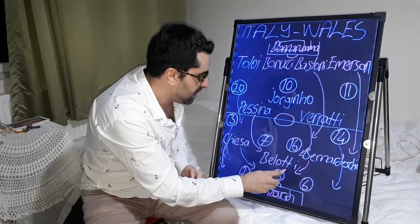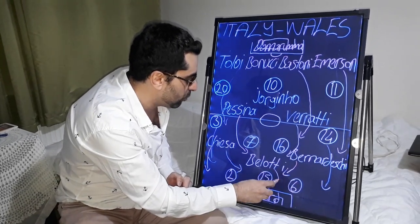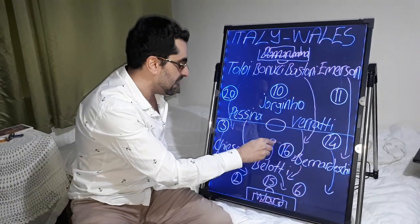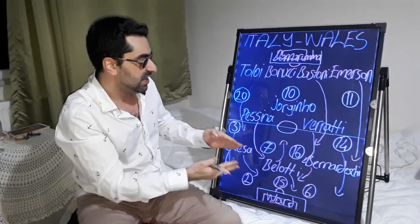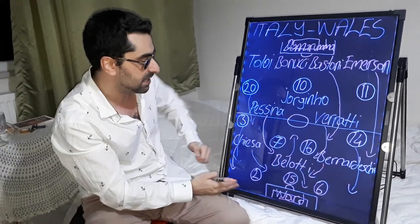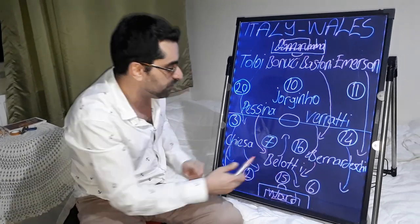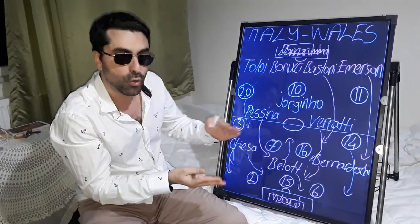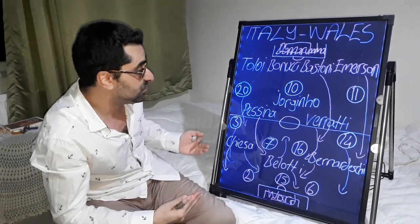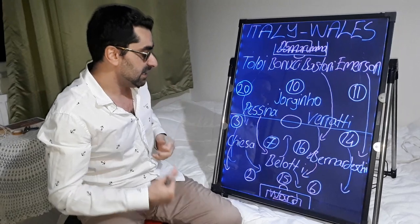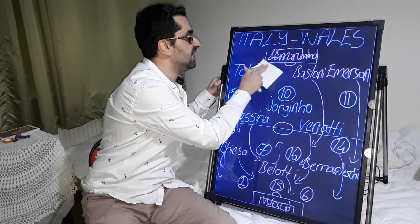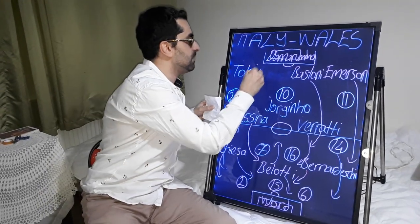In this game, Bellotti sometimes made runs between Wales' defence line, and Verratti sometimes dropped deep to receive the ball. Wales' defenders made fouls many times, and Verratti found a few goal positions but missed all of them. In the beginning of the second half, Bonucci went off and Acerbi replaced him in the Italian national team.